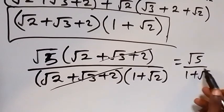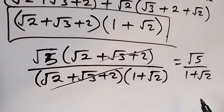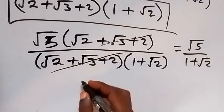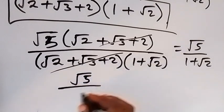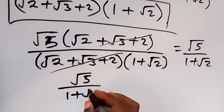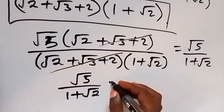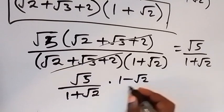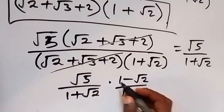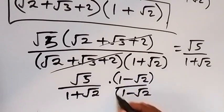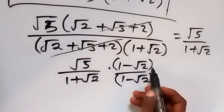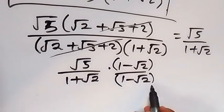We are not yet done — we can rationalize this by multiplying with the conjugate of the denominator, which is 1 minus root 2. So we multiply root 5 over 1 plus root 2 by 1 minus root 2 over 1 minus root 2. That is how to rationalize: we multiply and divide by the conjugate.